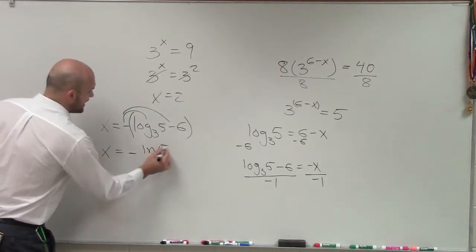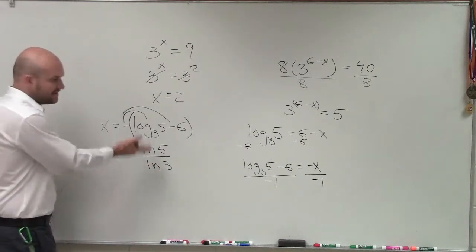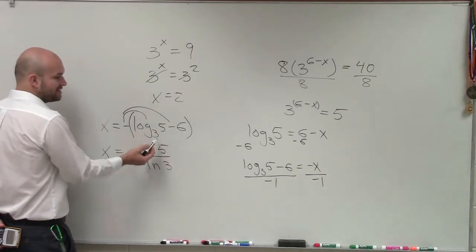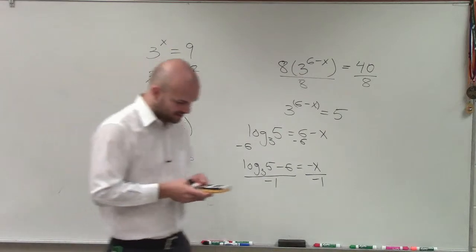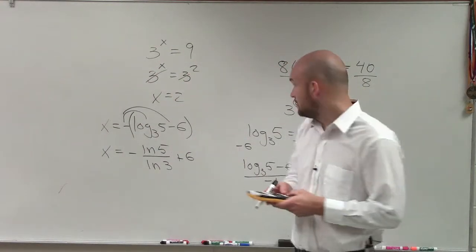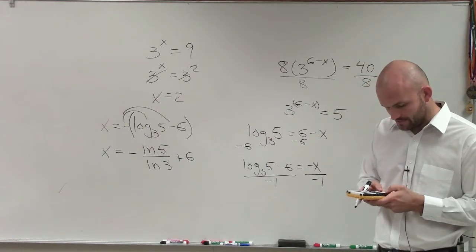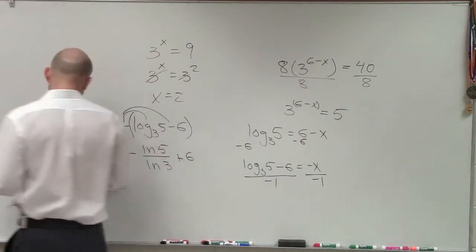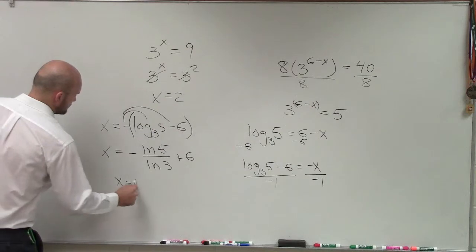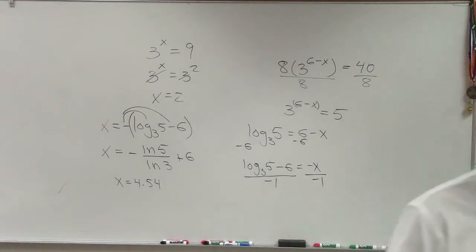Remember, you can use log base 10 or ln — it doesn't matter what the base is. You just need to take the ln of your value over the ln of the base, and then add 6. So I'll do negative ln of 5 divided by ln of 3, and then add 6. My answer is 4.54. And that's how we do it.